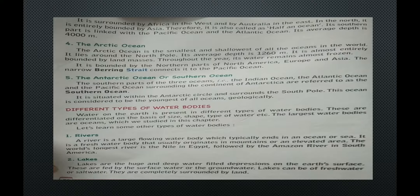Water on the earth is present in different types of water bodies, differentiated on the basis of size, shape and type of water. The largest water bodies are oceans. Other water bodies include rivers — a river is a large flowing water body which typically ends in an ocean or sea. It is a freshwater body that usually originates in mountains or an elevated area. The world's longest river is the Nile in Egypt, followed by the Amazon river in South America.